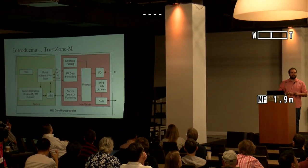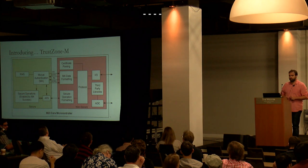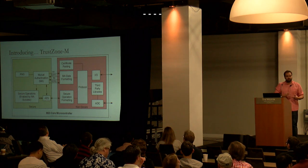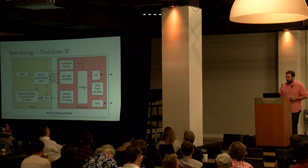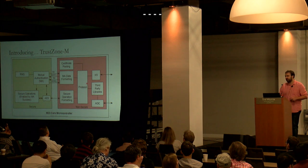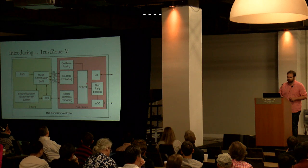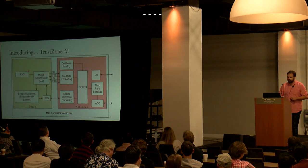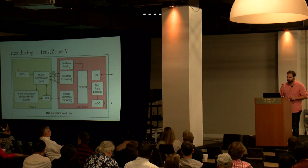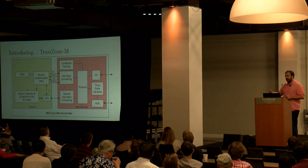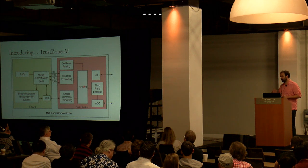TrustZone-M — you've probably heard of TrustZone, which normally refers to TrustZone-A or the Cortex-A version — is a hardware security boundary mechanism targeting really low-cost Cortex-M-type devices. The idea is similar to other TrustZones: you have protocol processing, third-party libraries, and untrustworthy code in the non-secure space. What you want to prevent is someone who achieves remote code execution from moving into the secure space, so you have a very straightforward, well-validated interface from unsecured to secure space, adding another layer of defense.